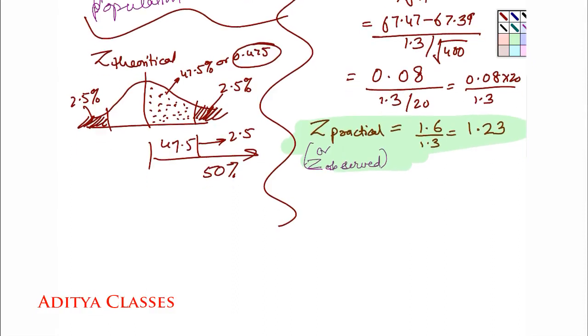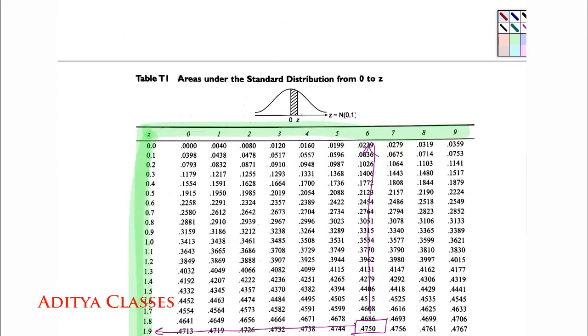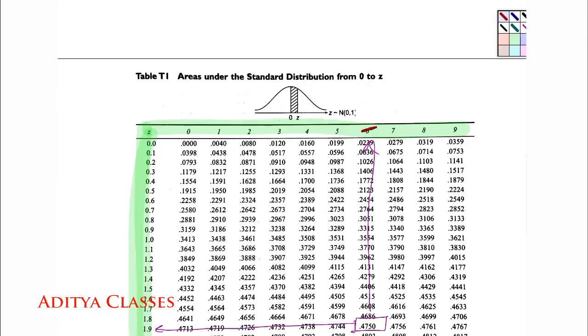So I get Z theoretical value to be 1.96.